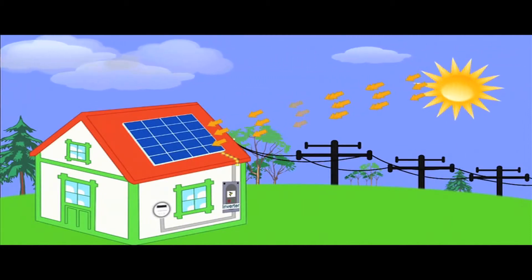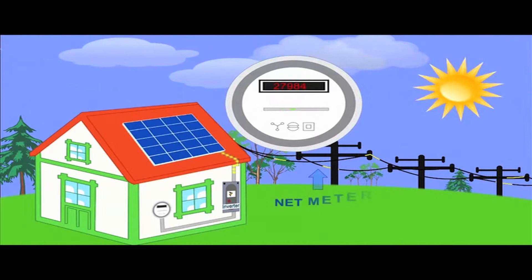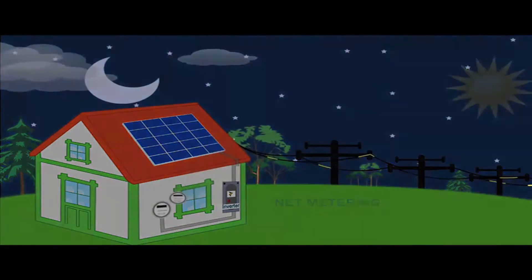Solar electric systems can produce more electricity than your home needs, and the extra you do not use goes back to your utility grid. This is called net metering, and you'll be able to enjoy watching your utility meter spin backwards.